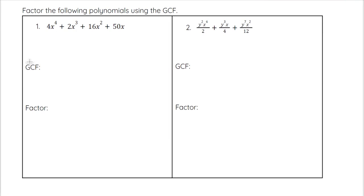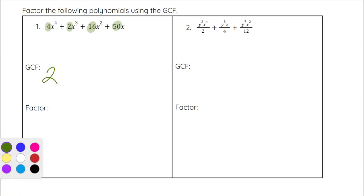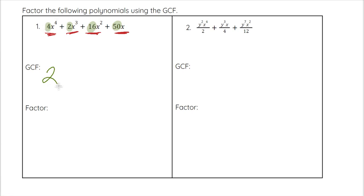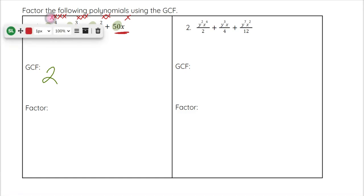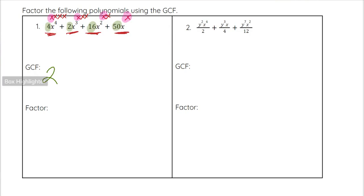So first I want to find the GCF of these four terms. Looking at the coefficients, we have 4, 2, 16, and 50 — all even, so we can at least divide by 2. And because one of them is 2, that's the highest number we can divide by. This time each term also has an x — x to the fourth, x to the third, x squared, and x. The lowest power is x to the first, so our GCF is 2x.